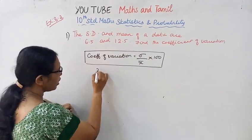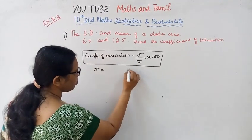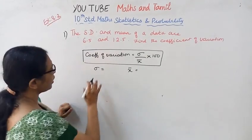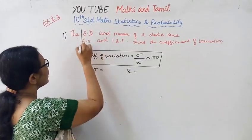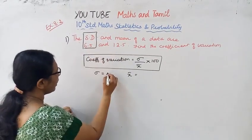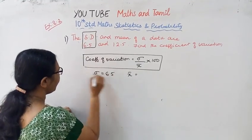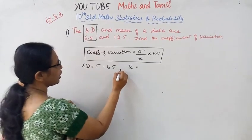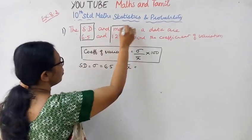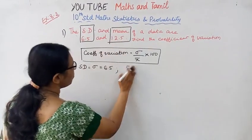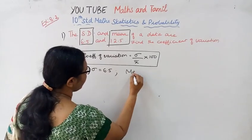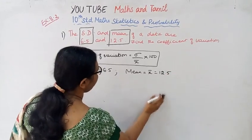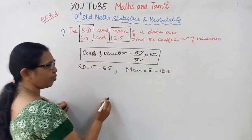If we know the value of X bar, we can find the coefficient of variation. Sigma is the standard deviation, that is 6.5. Mean is X bar, which is 12.5.